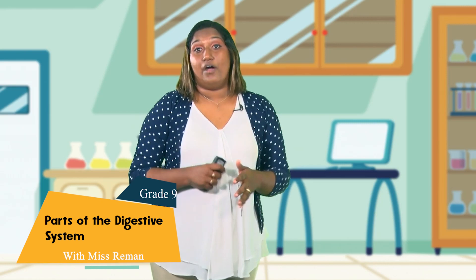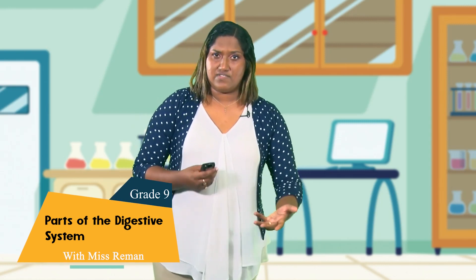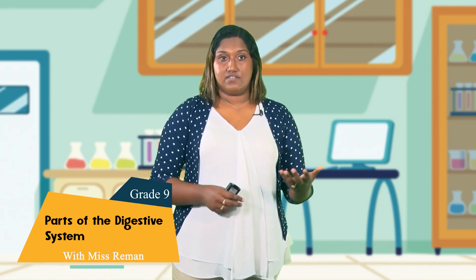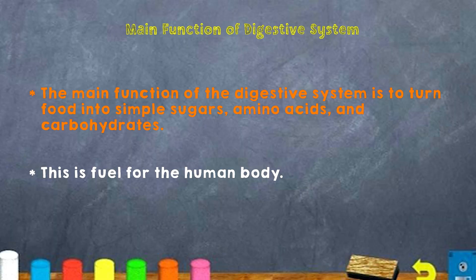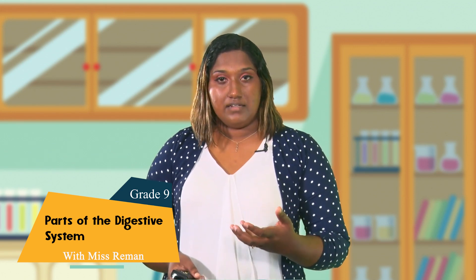What is the main function of the digestive system? The main function is to turn food into simple sugars, amino acids, and carbohydrates. Amino acids, sugars, and carbohydrates act as fuel for the body, giving us the energy we need. Hence the reason digestion is important — we need that energy to carry out our everyday work and tasks.